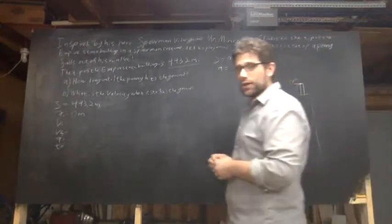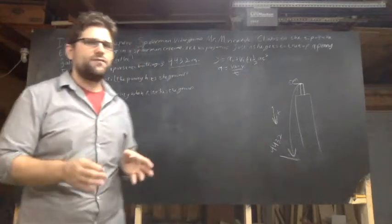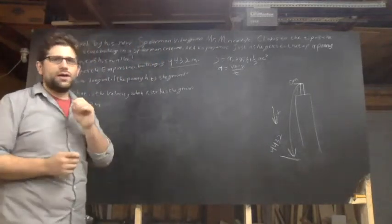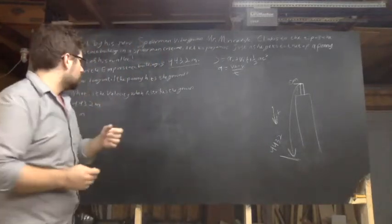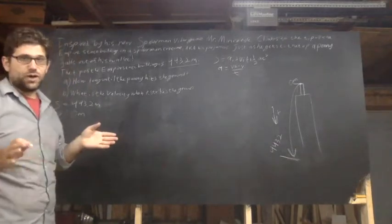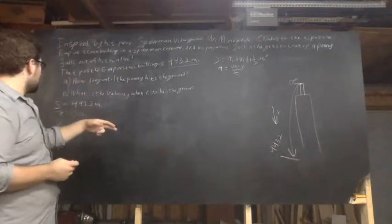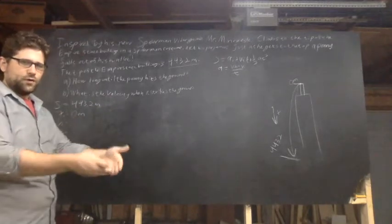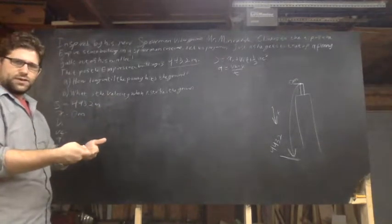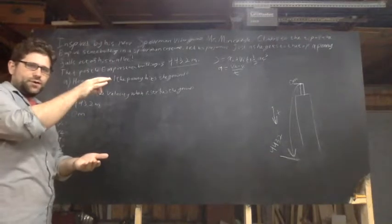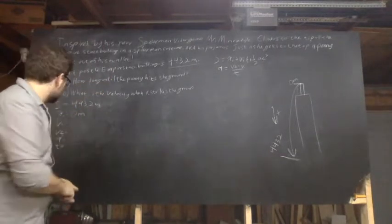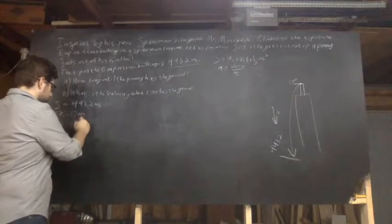So either way, it'll work out the same. The math will work the same, you just have to keep your integers straight. And I'm bad at that, so I don't do it. So what else do I know? I know that the penny doesn't start falling until it falls out of his pocket, so the initial velocity must be zero. Something doesn't start falling until I let it go, so VI is zero.